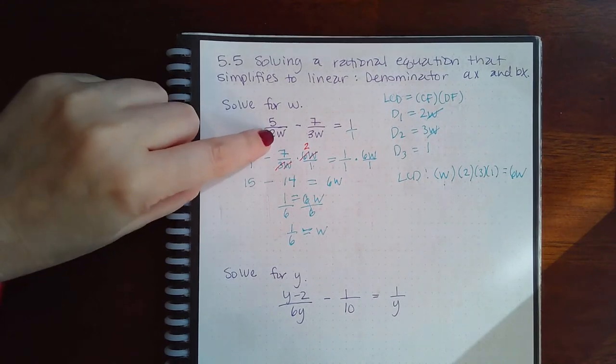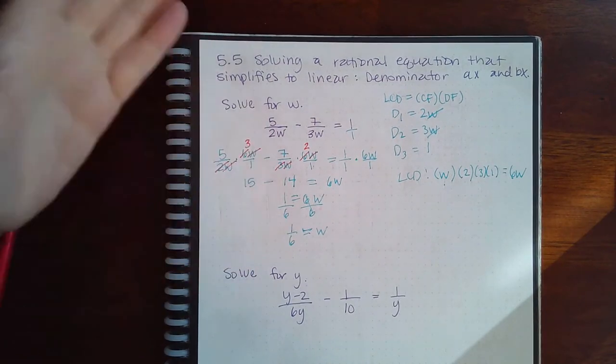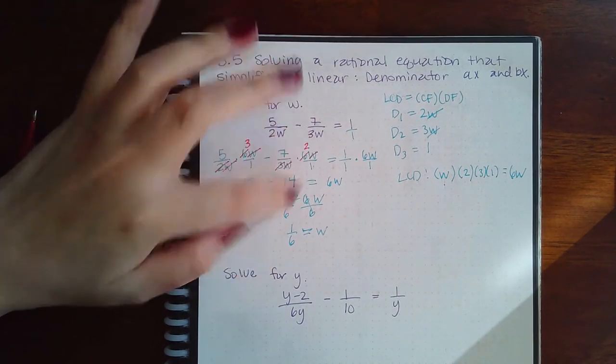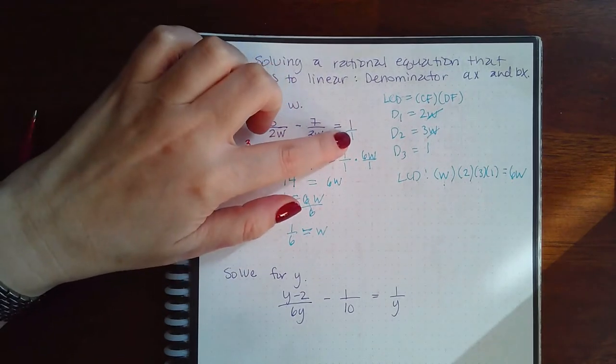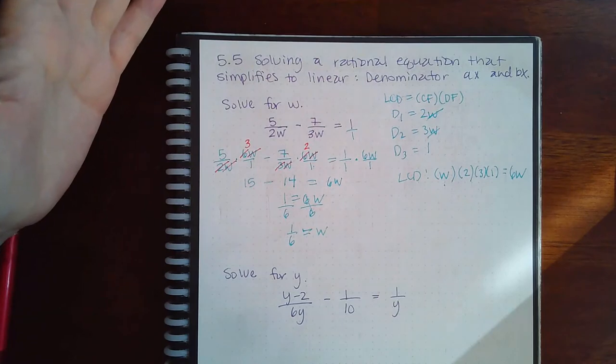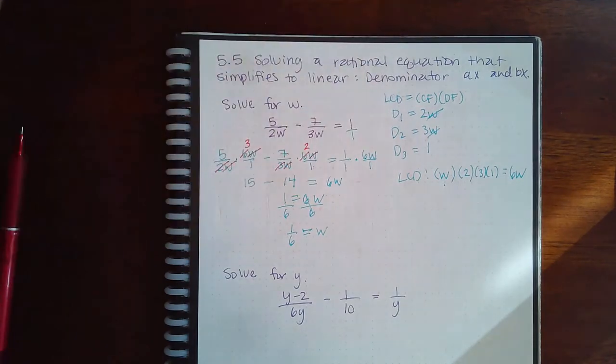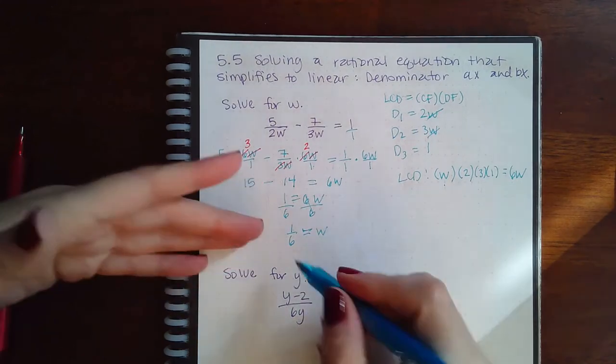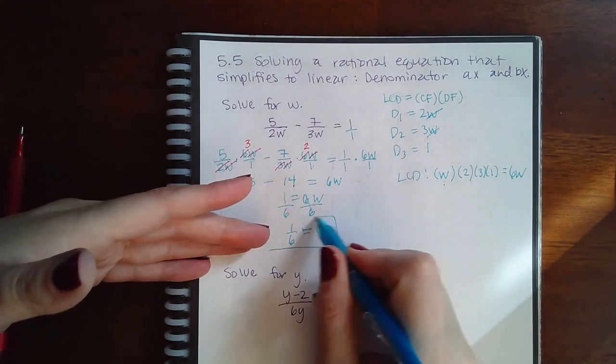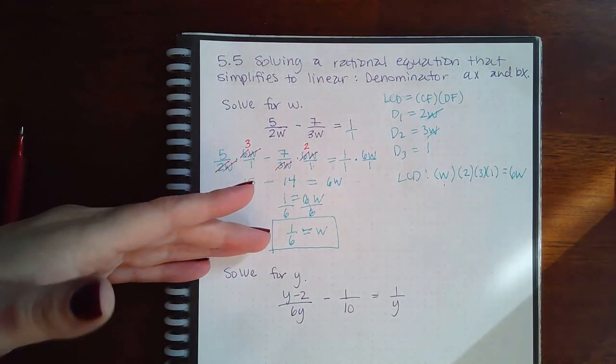So if I plug 2 times 16, I do not get 0. 3 times 16 is also not 0, and 1 is not 0 either. So none of the denominators will become 0 when plugging in this value. That means that my potential solution is an actual solution.